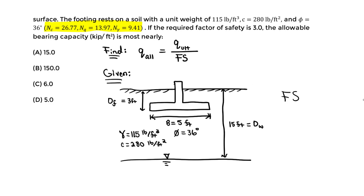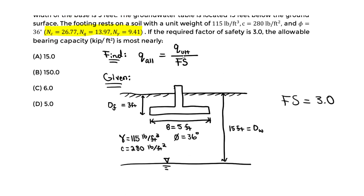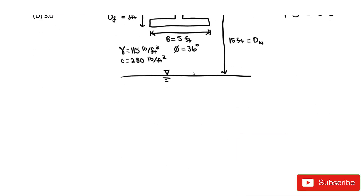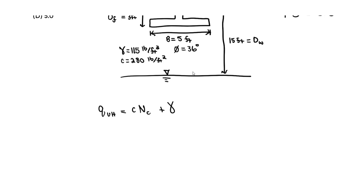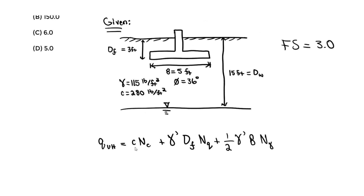Now let's solve for Q_ultimate using the ultimate bearing capacity equation: Q_ultimate equals C·Nc plus γ′·Df·Nq plus 0.5·γ′·B·Nγ. Here Nc is the bearing capacity factor for cohesion, Nq is for depth, and Nγ is for unit weight. This effective unit weight γ′ comes into play for more complicated questions involving groundwater.